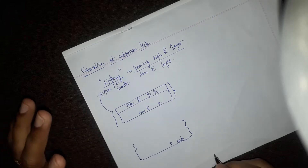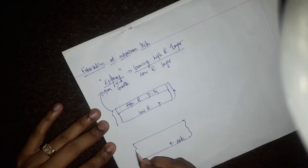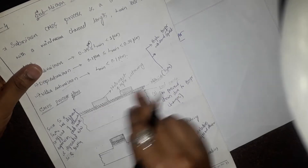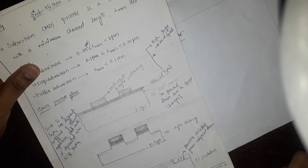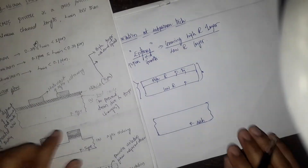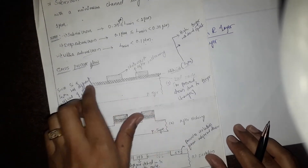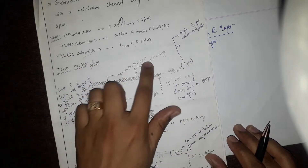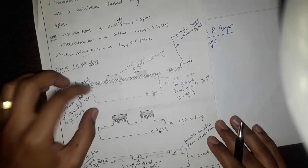Once the substrate is prepared, the very first step is to define the active regions. For defining the active region, the entire surface should be coated with a pad oxide and silicon nitride. Silicon nitride has a higher temperature withstand capability, so instead of SiO2, silicon nitride is used for fabrication at submicron technology. After depositing the pad oxide and silicon nitride, the entire surface of the wafer should be coated with a photoresist — assume a positive photoresist is used here.